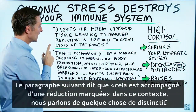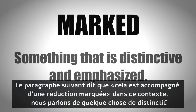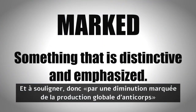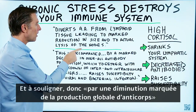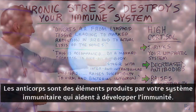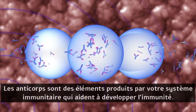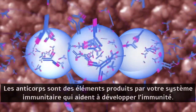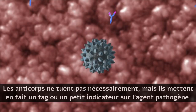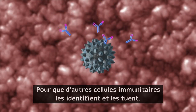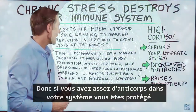The next point says this is accompanied by a marked decrease in overall antibody production. Antibodies are produced by your immune system and help develop immunity. Antibodies don't necessarily kill pathogens directly, but they put a tag or indicator on the pathogen so other immune cells can kill them. So if you have enough antibodies in your system, you are protected.